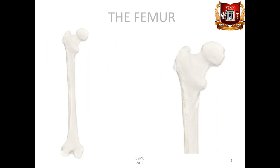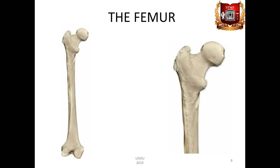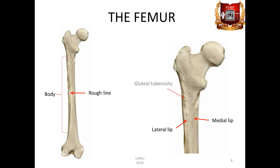On the back surface of the femur there is a rough line, linea aspera, which is divided into lateral and medial lips, labium laterale et labium mediale. Above and below the lips diverge. Above, the lateral lip widens, thickens and forms the gluteal tuberosity, tuberositas glutea. The medial lip continues into the pectineal line, linea pectinea. Near the distal epiphysis, the lips diverge and limit the popliteal surface, facies poplitea.